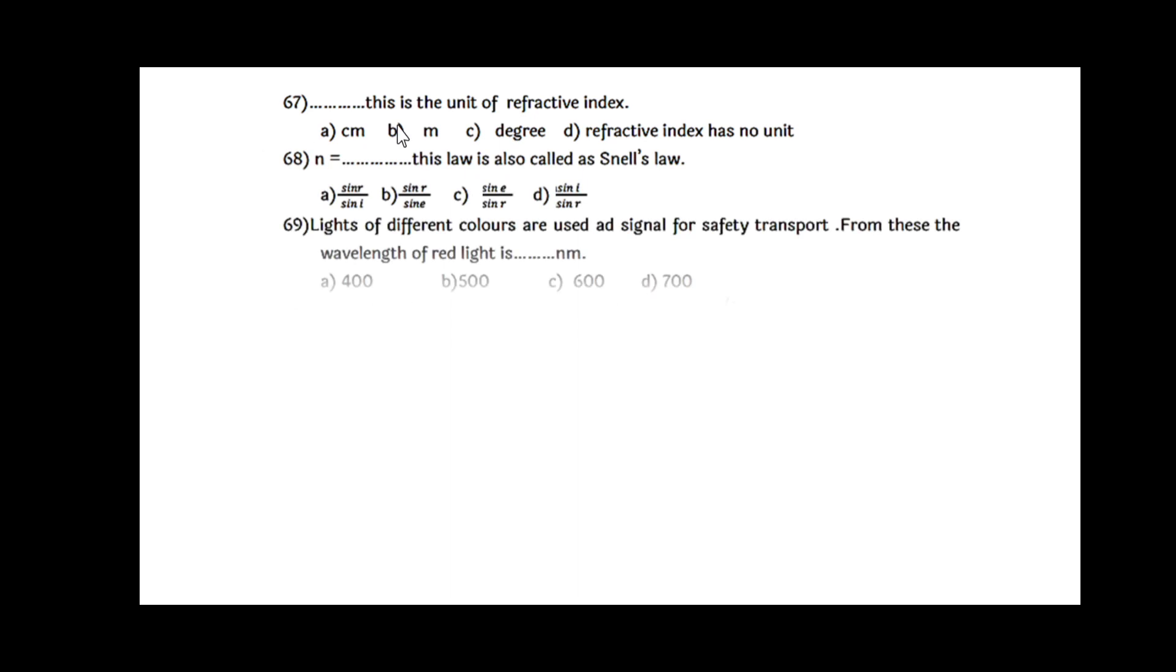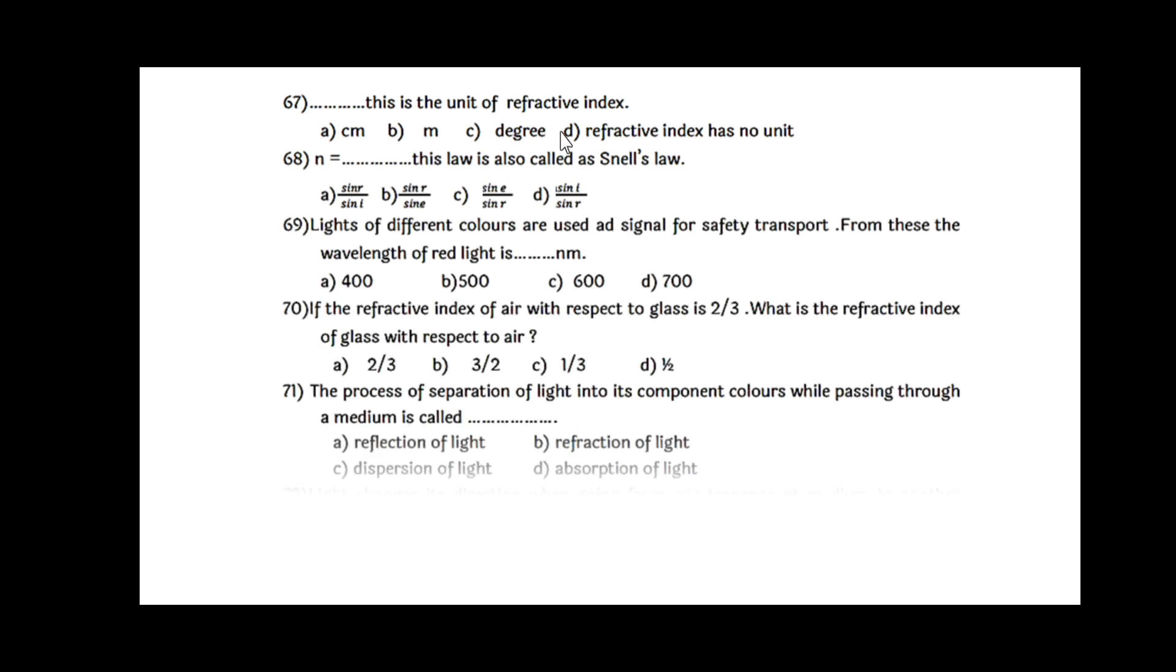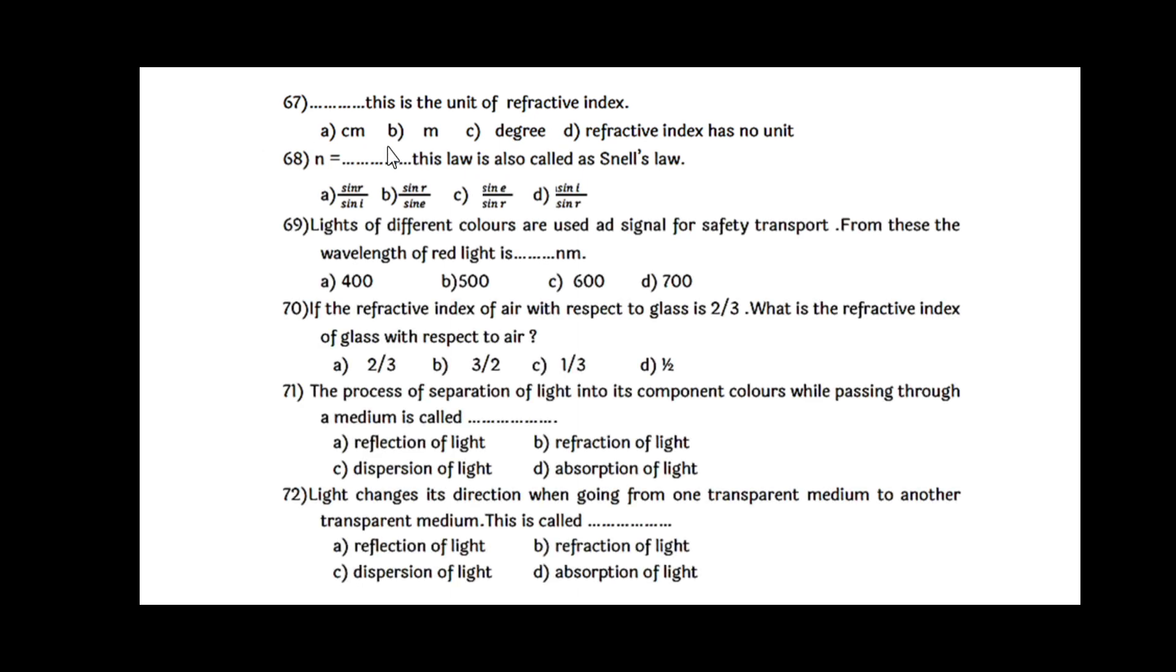Next, we will see that refractive index has no unit. Refractive index has no unit since it is a ratio of the same quantity. The refractive index N is equal to... And this is called Snell's law. Here out of these four options, option D is right. That is sin I upon sin R.